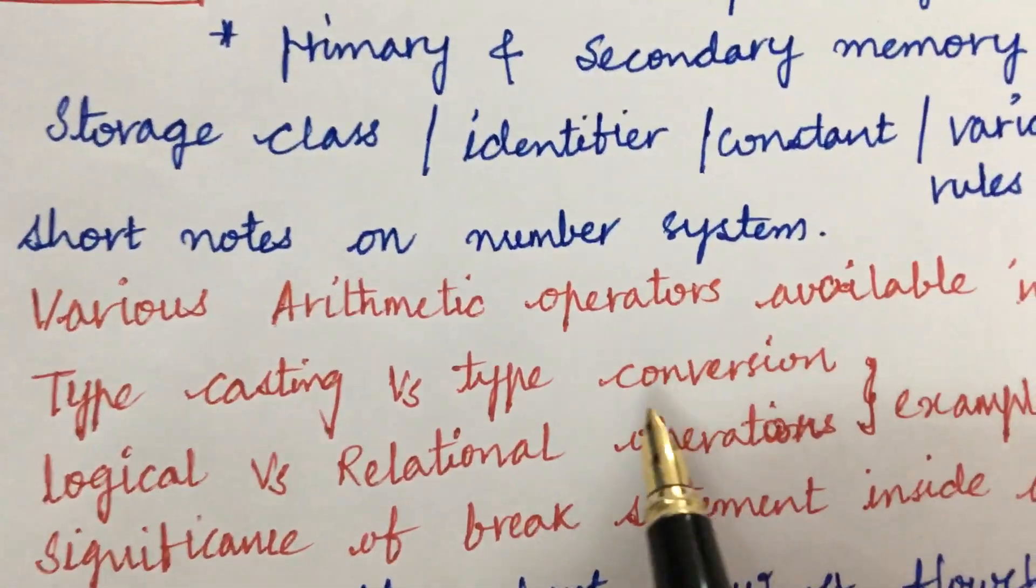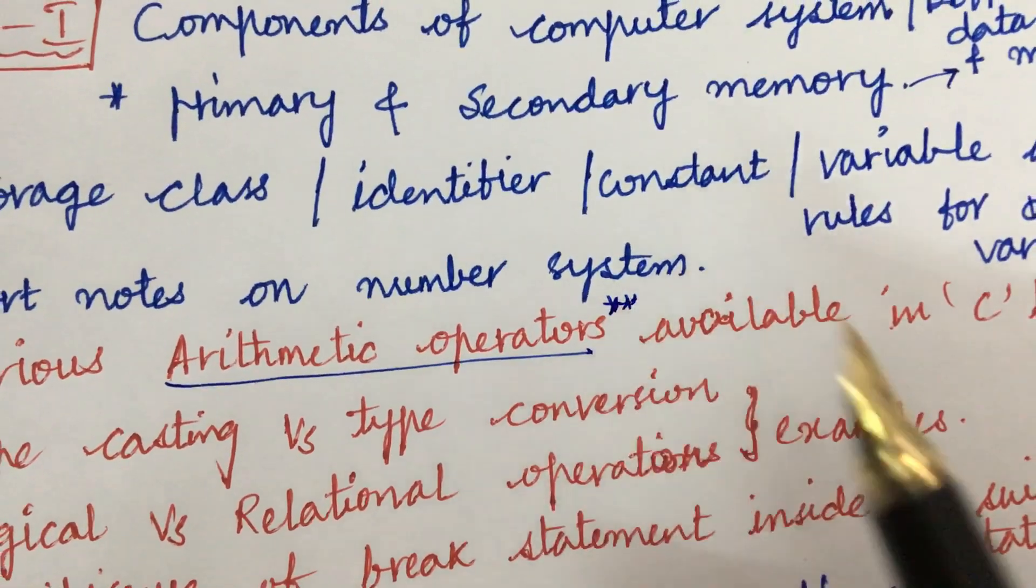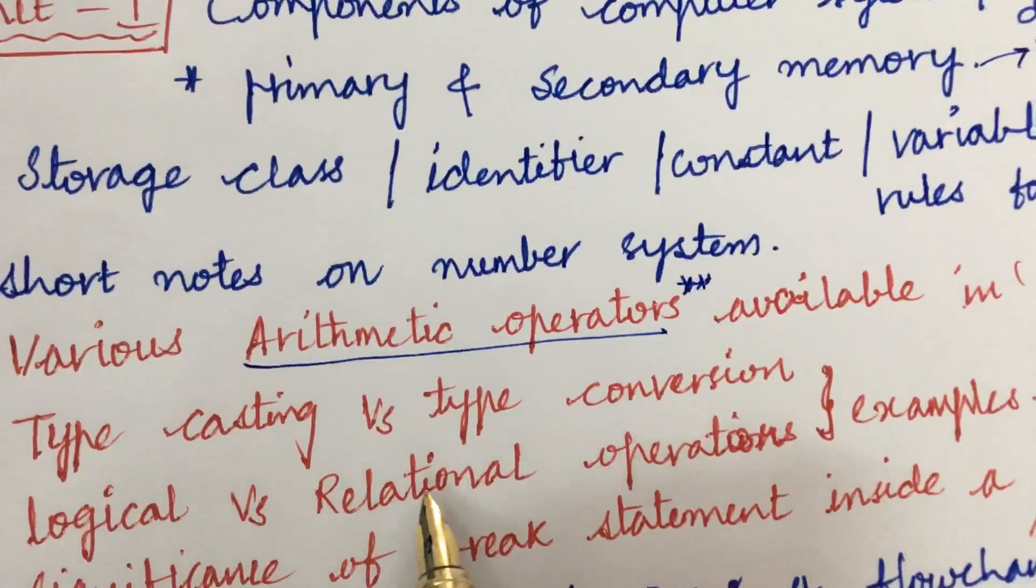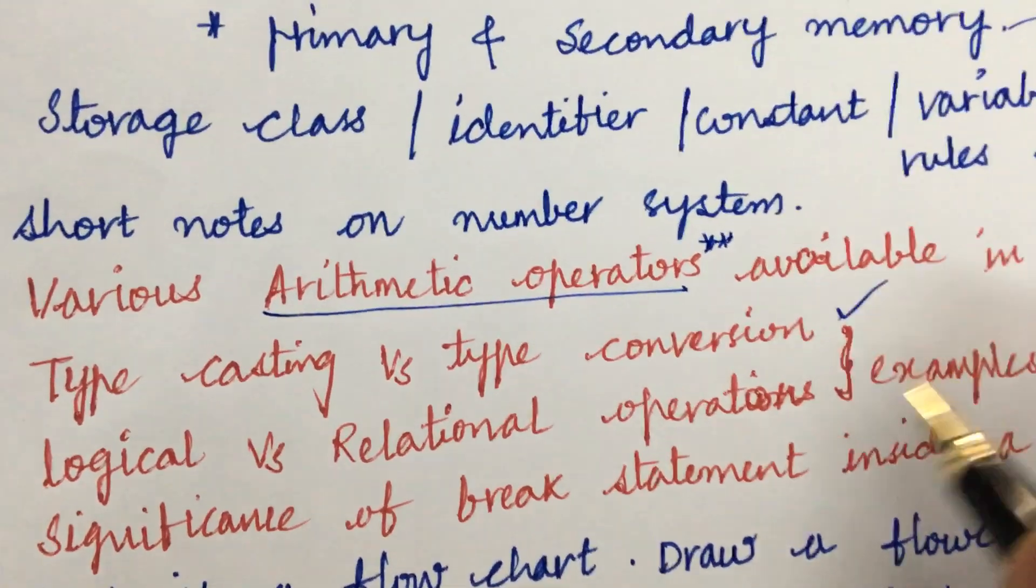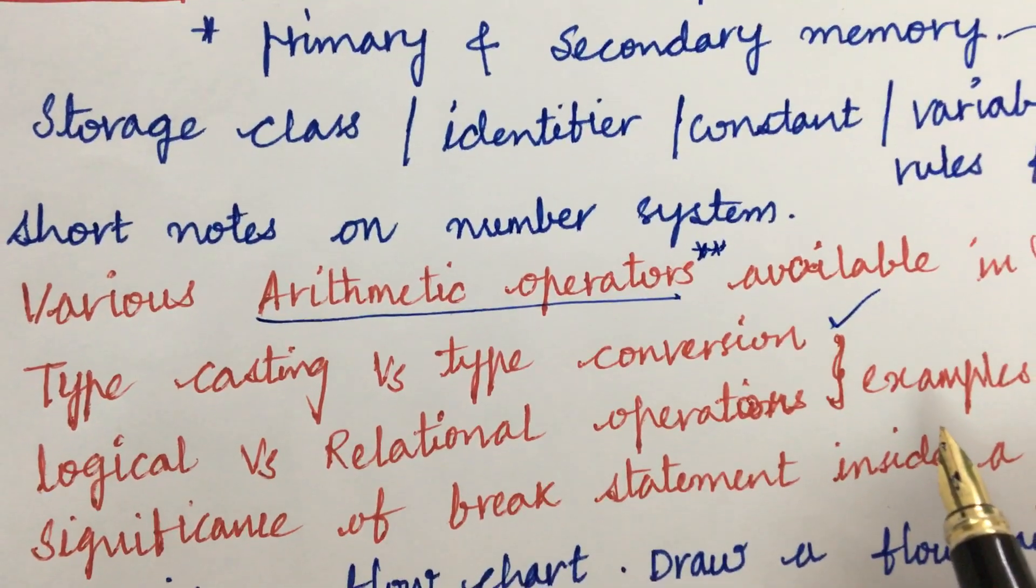Write short notes on number system and the various arithmetic operators - said to be very important and a sure question which we can expect available in C language. Type casting versus type conversion is also very important along with examples, and logical versus relational operations.